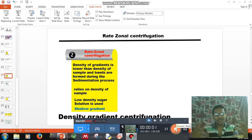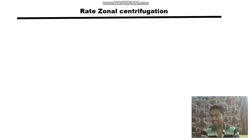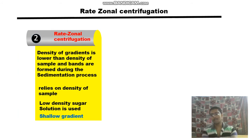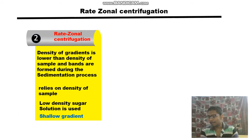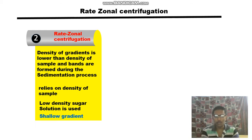The drawback of differential centrifugation is cross-contamination of particles, which can be overcome by layering the sample as a narrow zone on top of the density gradient. This is what is done in zonal centrifugation.